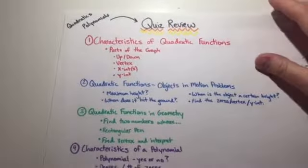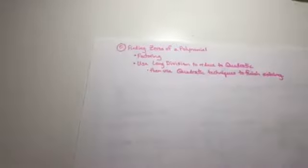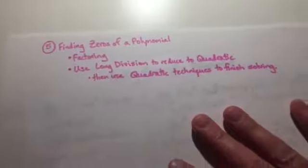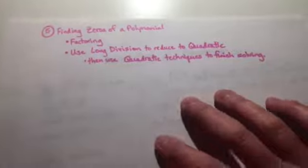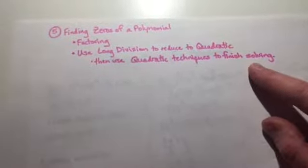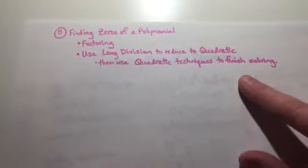All right, so this is the last part of the quiz review. This part is section 5 where we're finding zeros of a polynomial either by factoring or we can use long division to help reduce the polynomial to something quadratic.